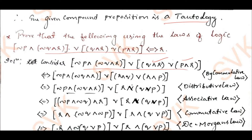By commutative law, p conjunction q can be written as q conjunction p. In the same manner I have written r conjunction q and r conjunction p. Then using the distributive law — p conjunction (q disjunction r) equals (p conjunction q) disjunction (p conjunction r) — I apply it to write r conjunction (q disjunction p).